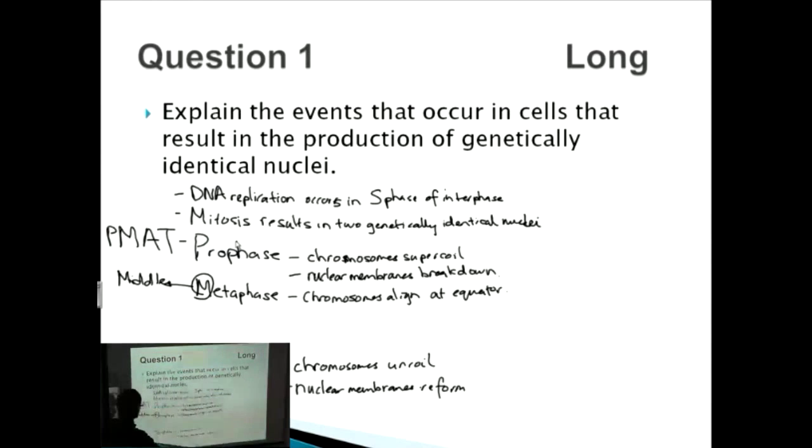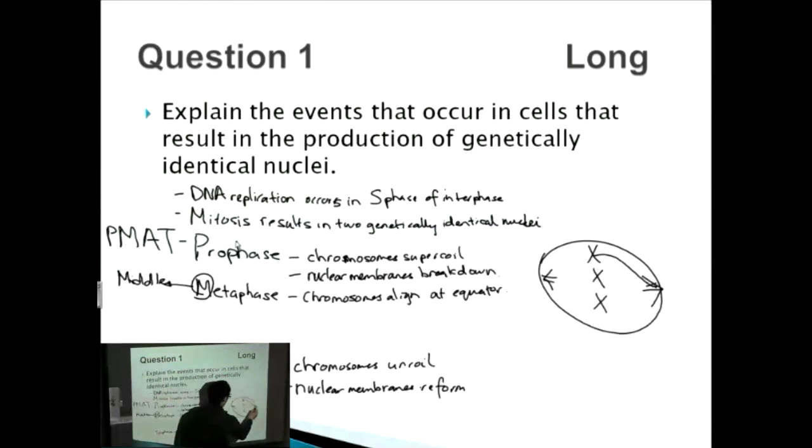Then you've got the spindle fibres, which are on either side of the poles. So if you go here, so we have our spindle fibres here. And then we have our chromosomes lining up like this. And then these spindle fibres, they attach themselves to the centromeres on either side.